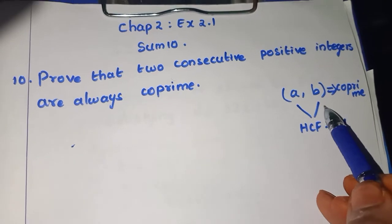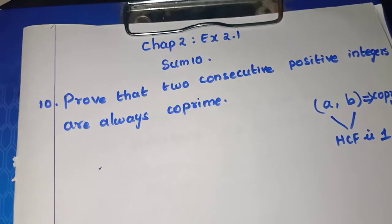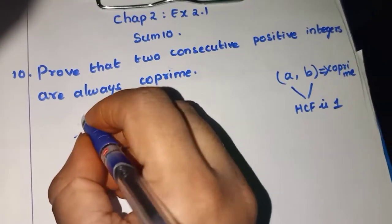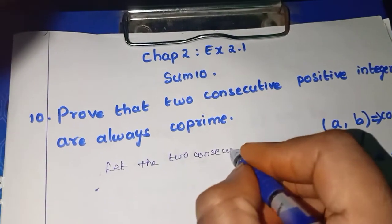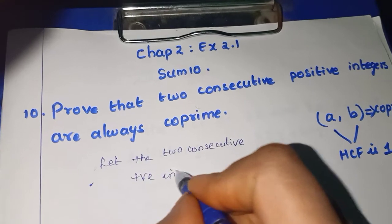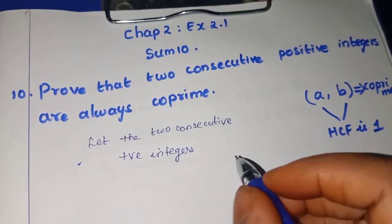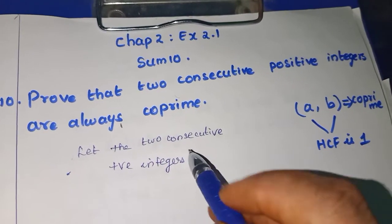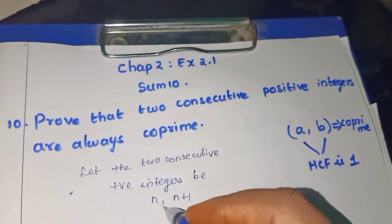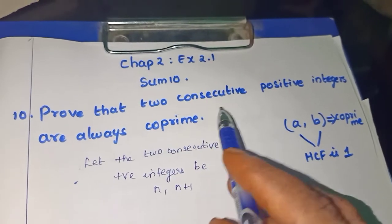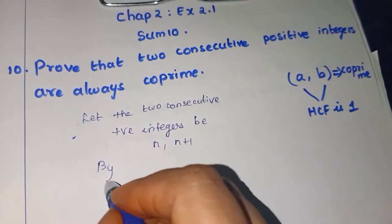We are going to take 2 consecutive positive integers. If one is n, the next will be n plus 1. For example, if 3 is first, 4 will be the next consecutive integer. So, let the 2 consecutive positive integers be n and n plus 1. To show they are co-prime, we need HCF equal to 1. We can use Euclid's division algorithm to prove this.